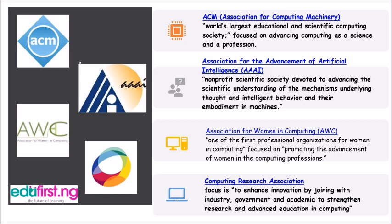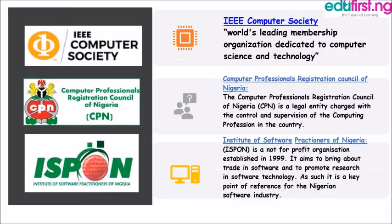The Computing Research Association focuses on enhancing innovation by joining with industry, government, and academia to strengthen research and advance education in computing. Another example is the IEEE Computer Society, which is the world's leading membership organization — almost every computer professional belongs to it — dedicated to computer science and technology.